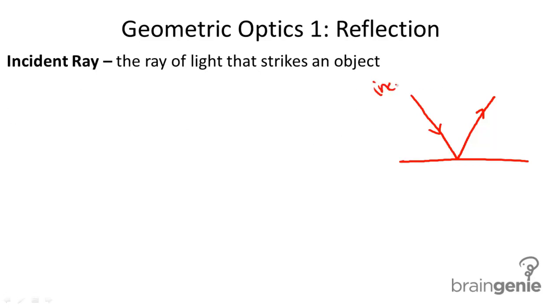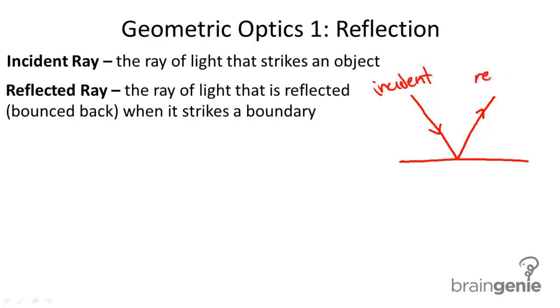This first ray is what I call an incident ray and that's the ray of light that strikes an object. The second ray is what I call the reflected ray and that's the ray of light that is reflected off of the boundary.